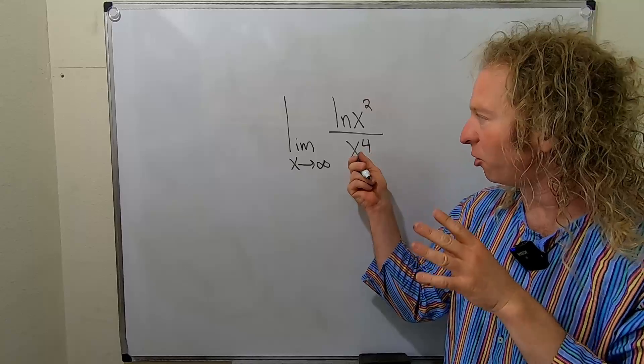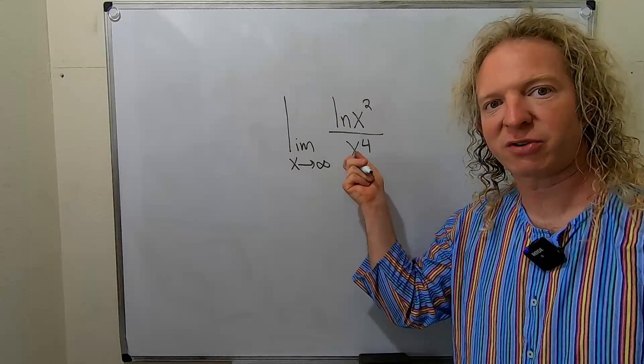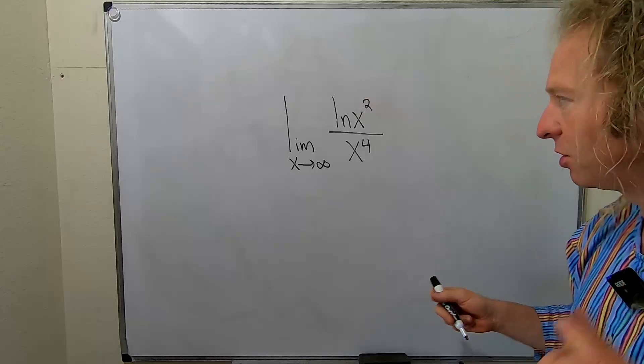Whenever you have a polynomial on the bottom and a log on the top, the answer is zero because this grows faster than this. But let's say you wanted to show some work.